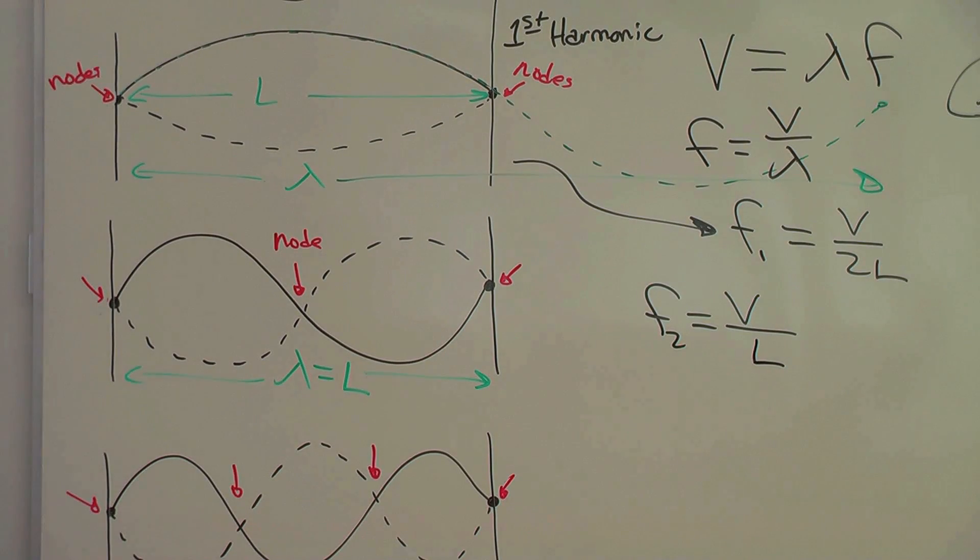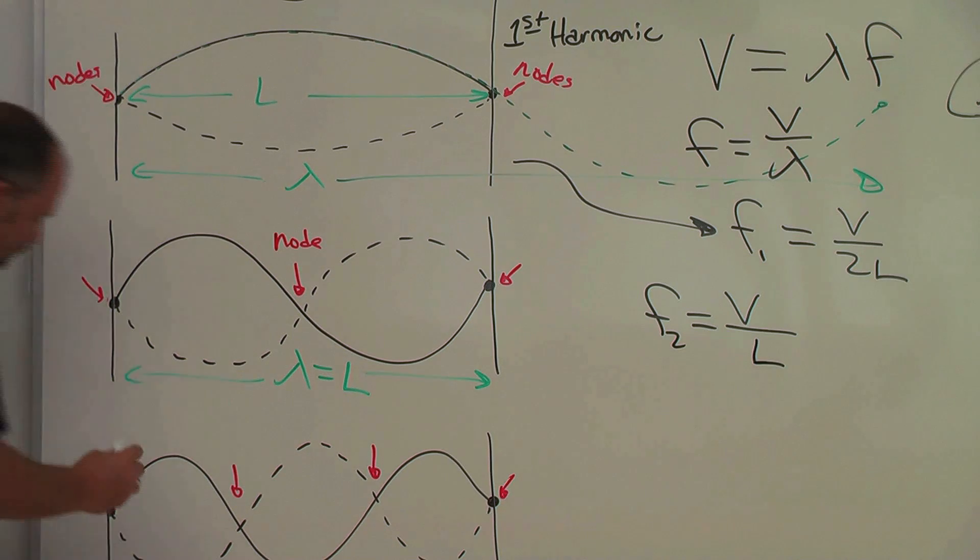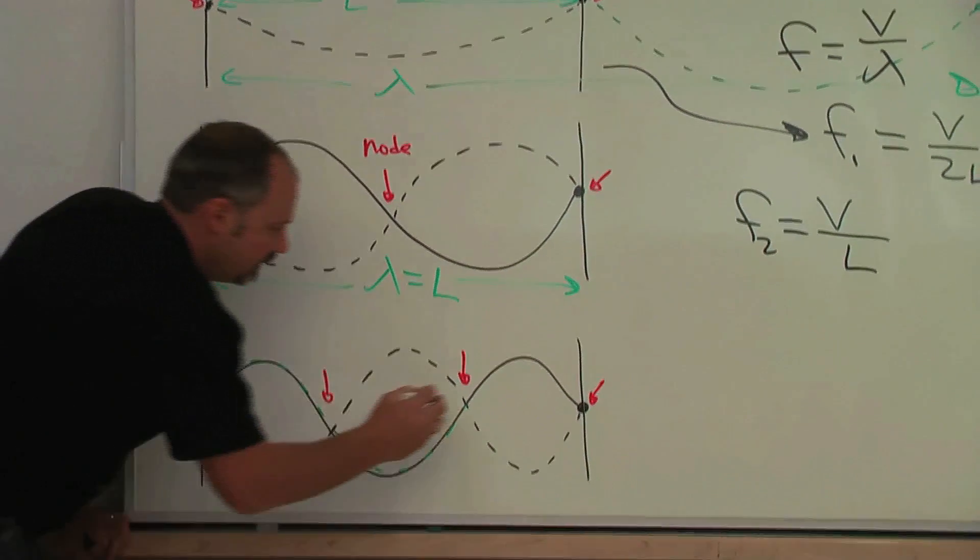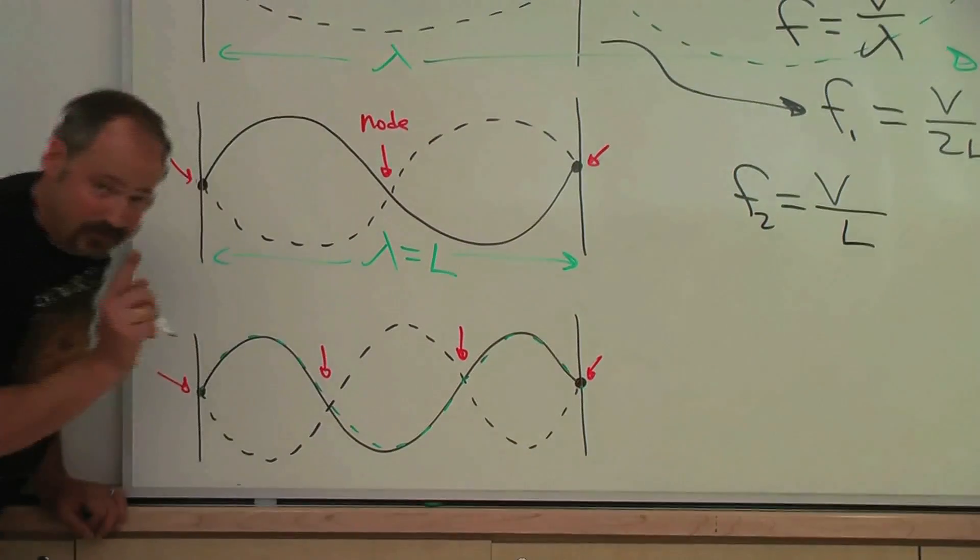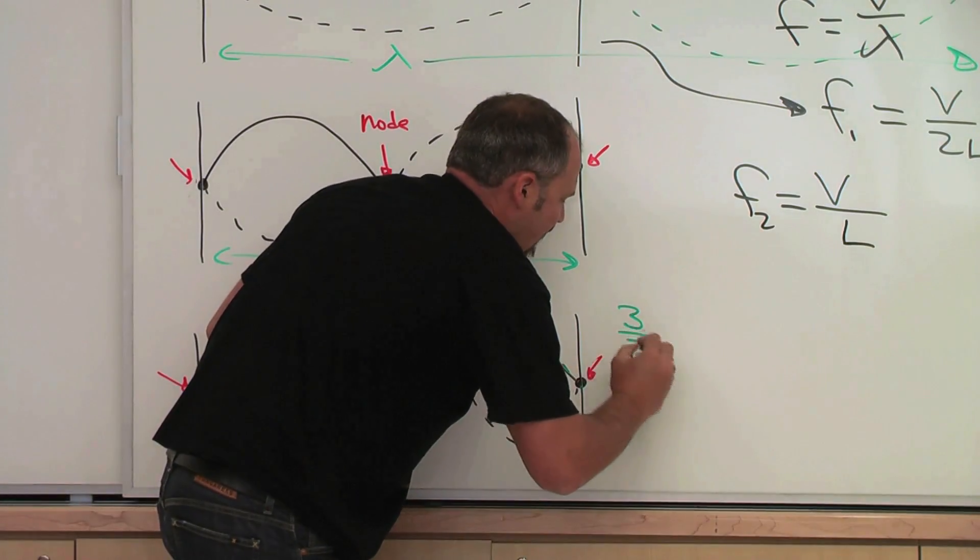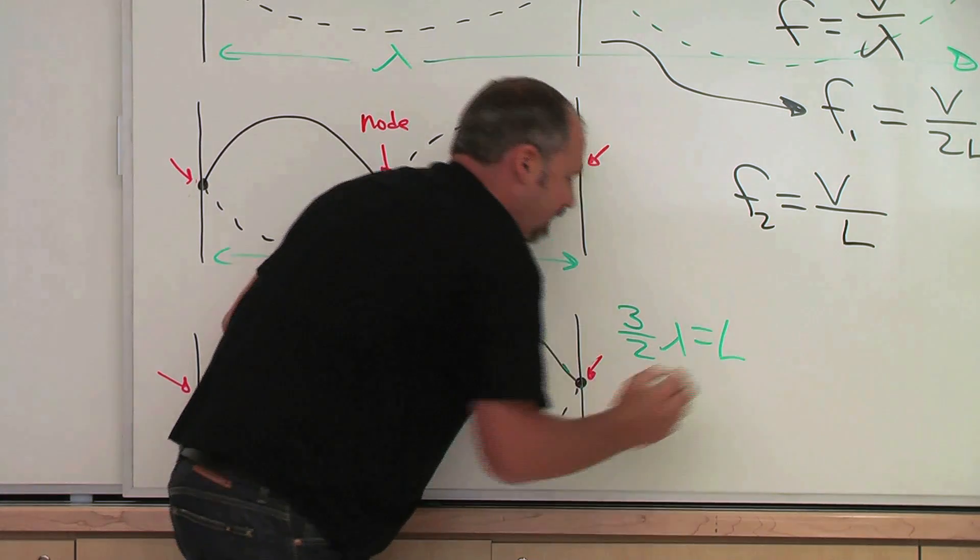Now let's look at the third possibility. Third possibility, we have one wavelength and a half. Here, three halves of the wavelength is equal to L, the length of the string.